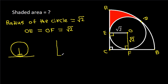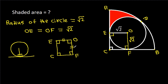In quadrilateral CEOF, this angle is 90°, this angle is 90°, this angle is 90°, that means this angle will also be 90°. Also, OE is equal to OF, that is square root of 2, so it will be a square. And OE will be equal to CF, that is square root of 2.